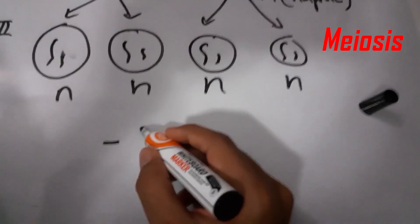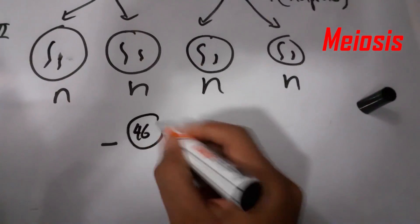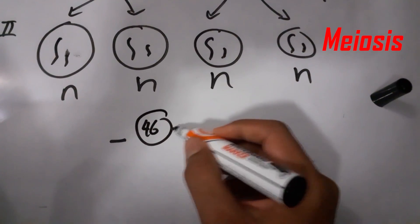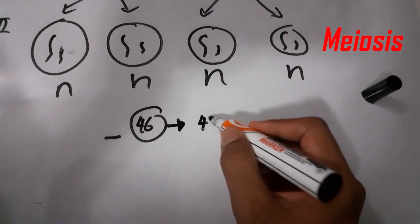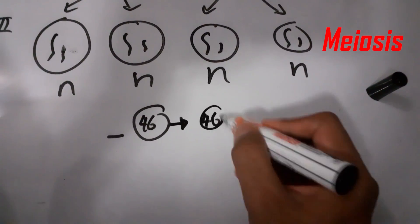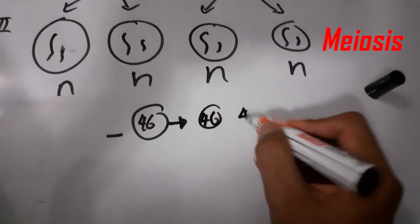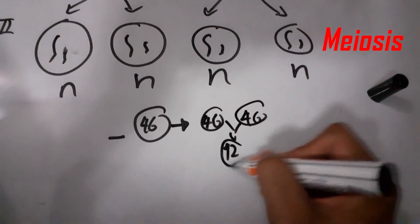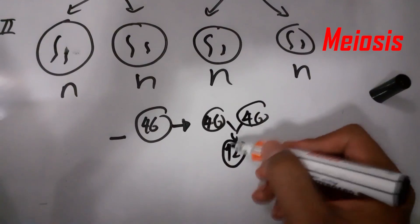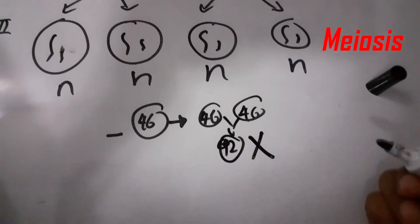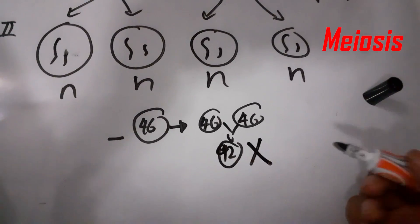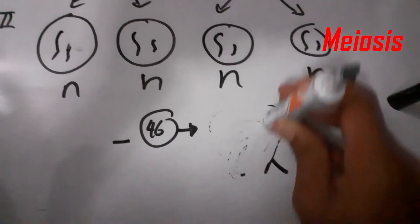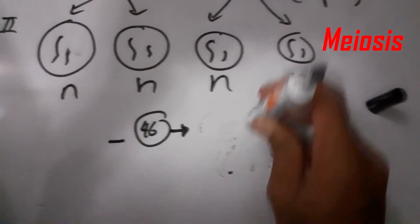Consider that you have 46 chromosomes. If the chromosome number didn't become halved, and sperm also got 46 and egg also got 46, these two would combine to form 92 chromosomes — which would not happen. So the chromosome number is halved so that from generation to generation the chromosome number is maintained constant.